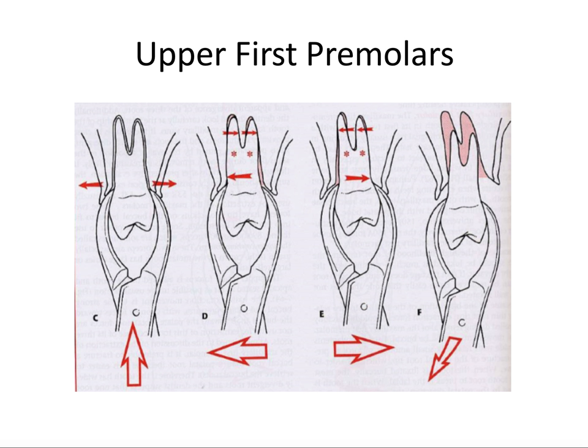Lower premolars are probably among the easiest teeth to extract. Rotation is most important due to their very conical and typically straight single roots. Lower premolars can be very nice to extract, and we see that rotational arrow indicated here.